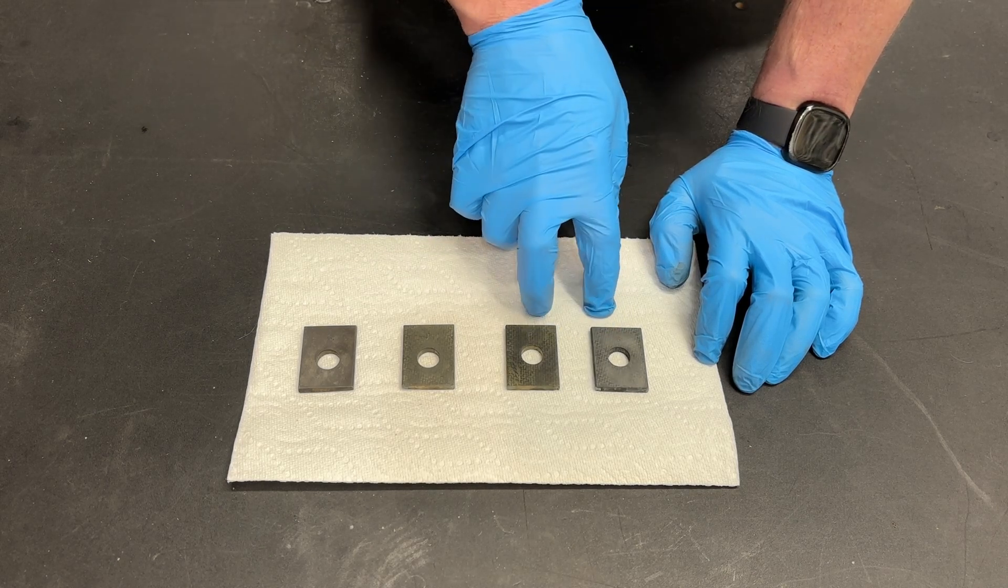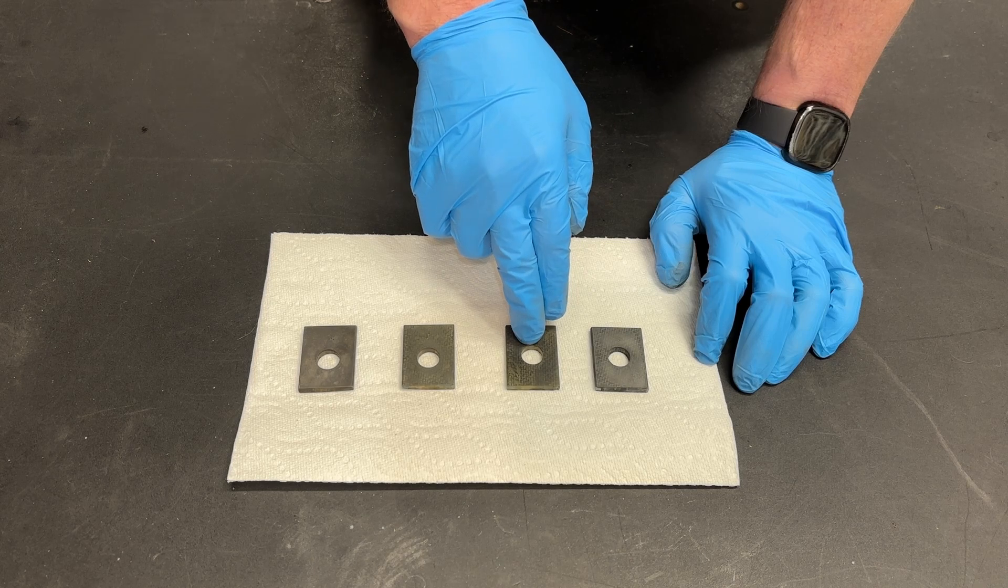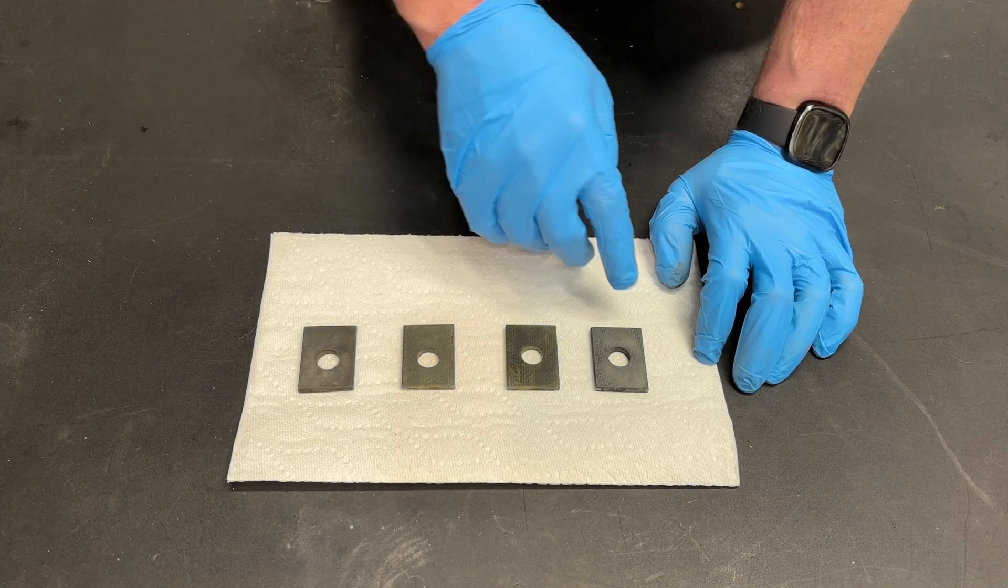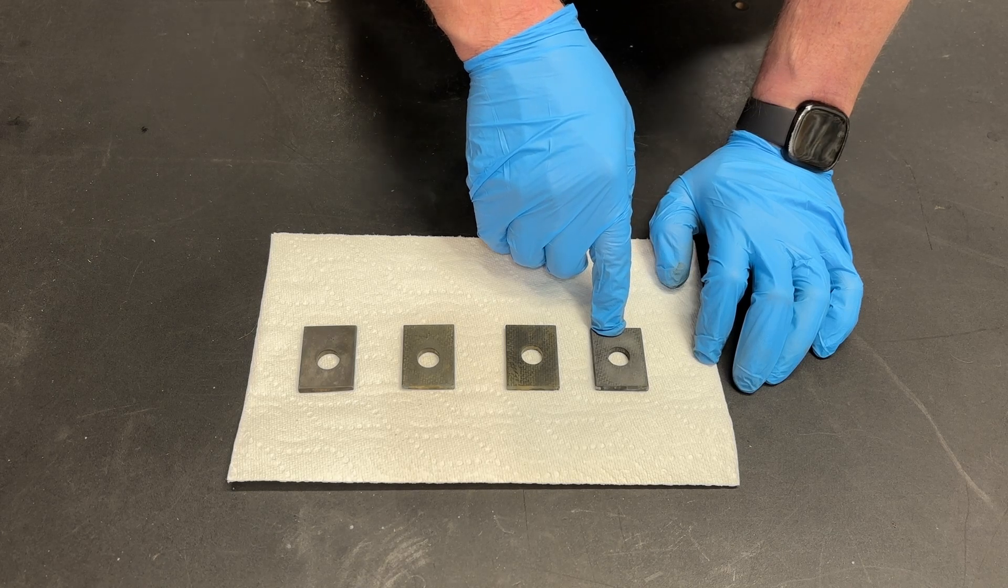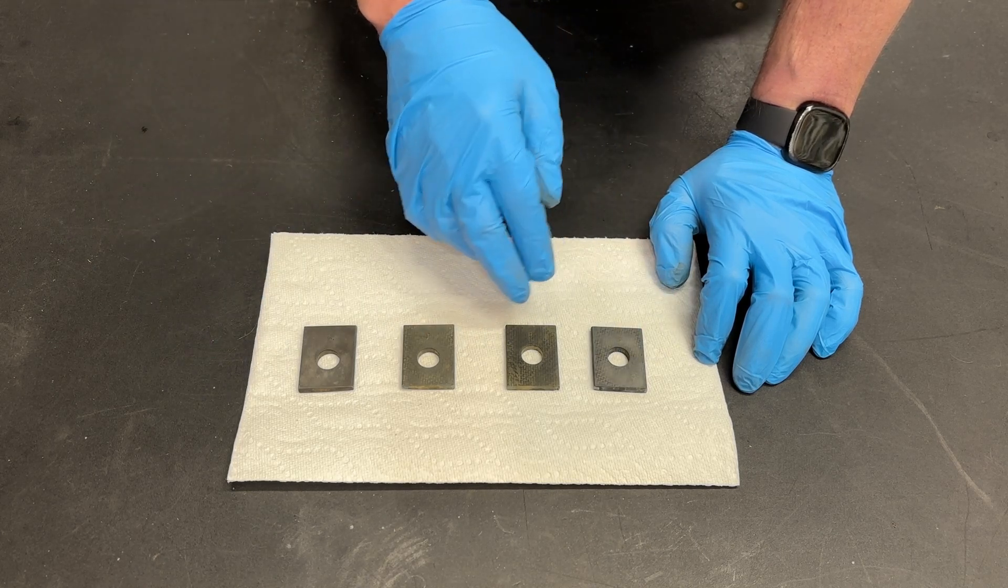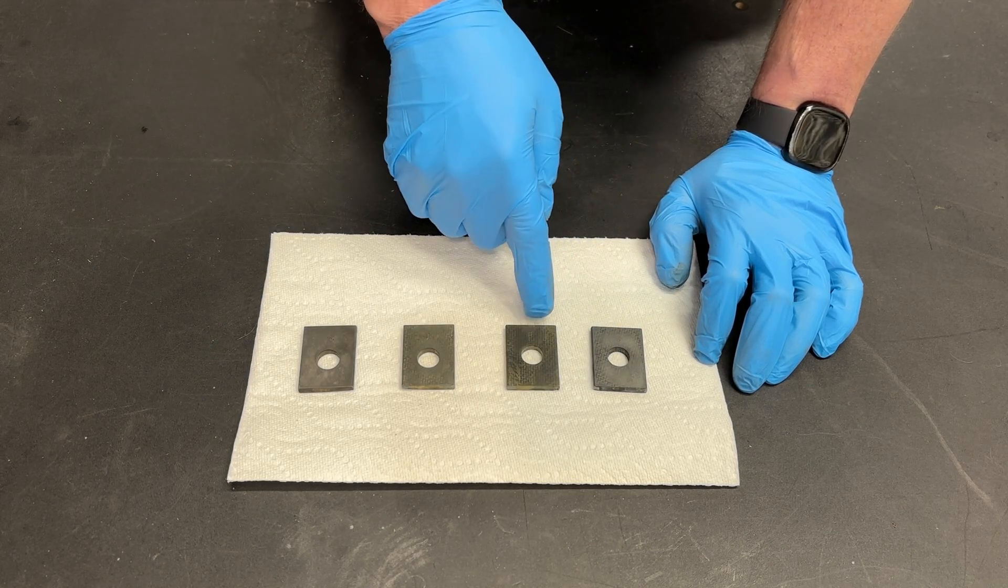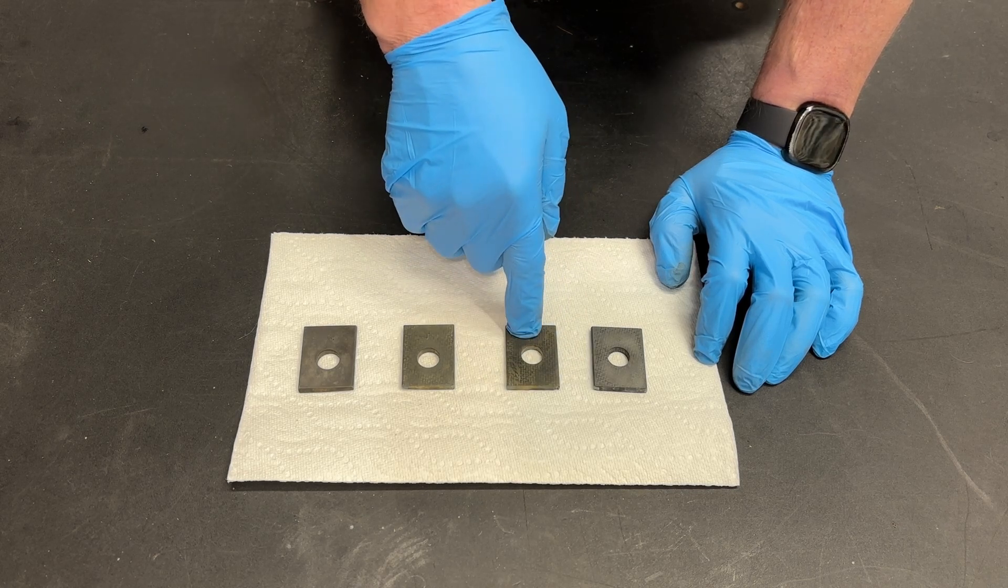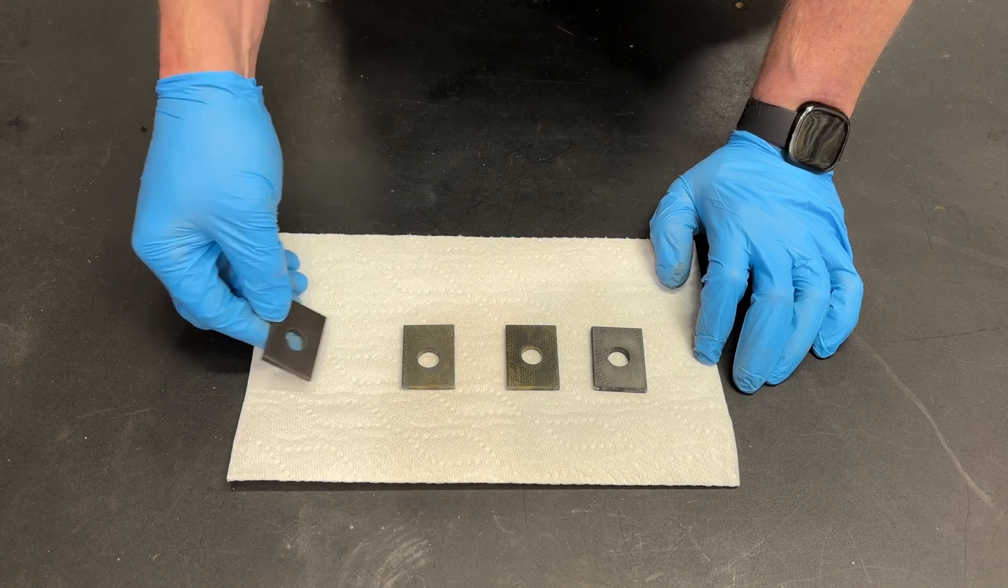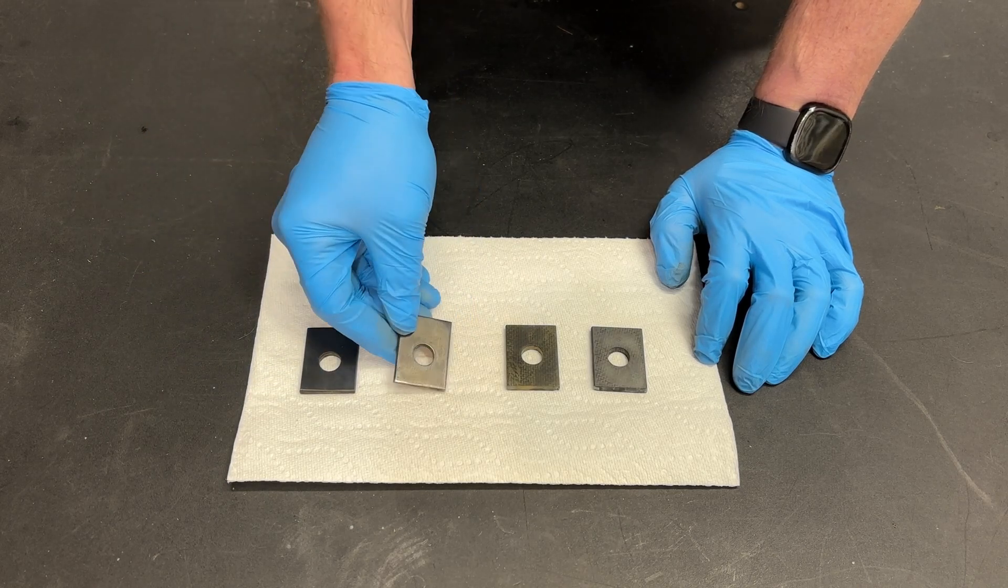Now the difference between these two coatings is this is your general metal bluing touch-up solution. And this one is for hardened steel and alloy steel. Now these are all mild steels. So it stands to reason that the general Perma Blue would work better on mild steel than the Super Blue. Flip it over. Look at the back side.